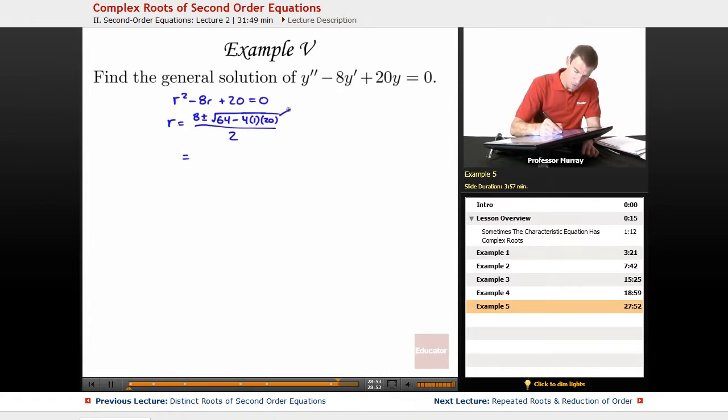Now 4 times 20 is 80, so we get 64 minus 80 there. 8 plus or minus, 64 minus 80 is negative 16, so we get a negative 16 under the radical over 2.